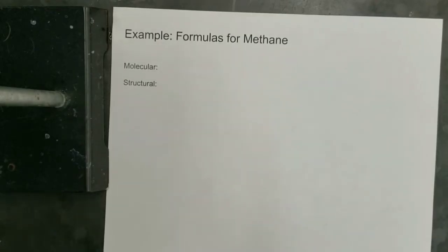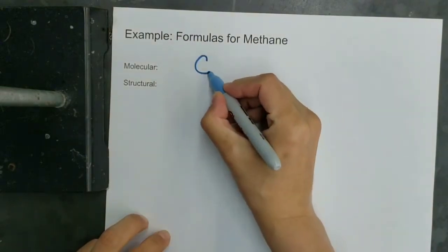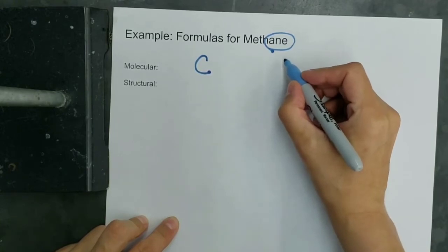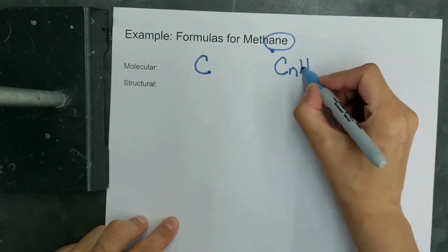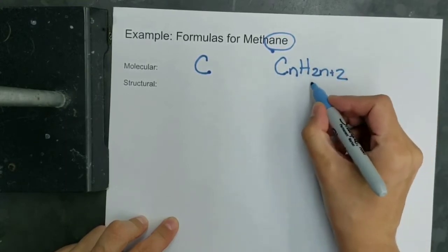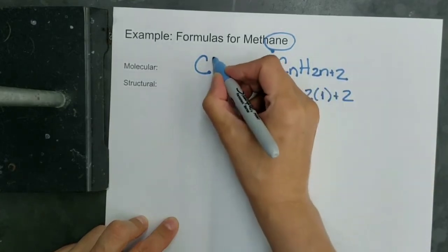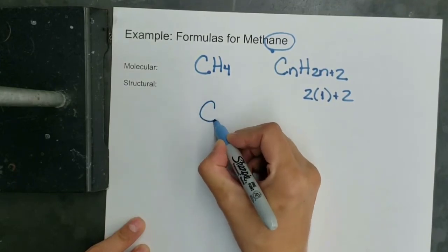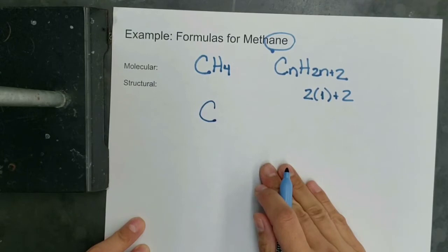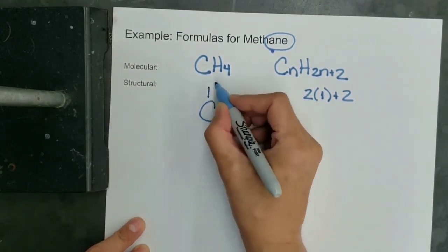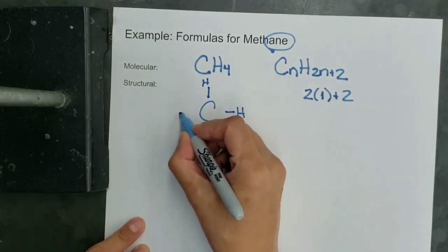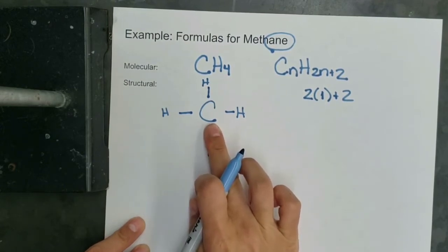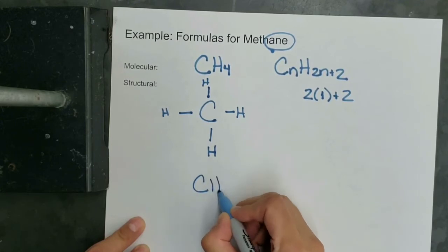Let's look at methane. The prefix meth tells us there will be one carbon, and the suffix -ane tells us it is an alkane. The general formula from reference table Q is CnH(2n+2), so with one carbon, we need four hydrogens. We always start by drawing the carbons — in this case, just one. Carbon always makes four bonds to achieve a stable noble gas valence electron configuration. We attach a hydrogen at each bond. The condensed formula for methane is simply CH4.